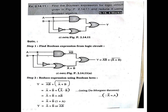Next, the NOR gate input is A bar plus B bar — A not connected and B not connected give A bar plus B bar. Then the NAND and NOR outputs go to the OR gate. OR gate means addition, so Y is equal to the first input plus the second input: Y = (A into B bar) + (A bar plus B bar).